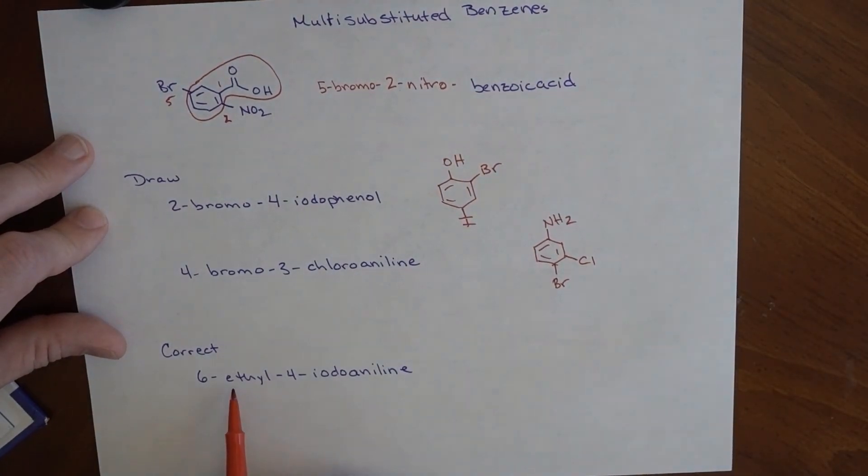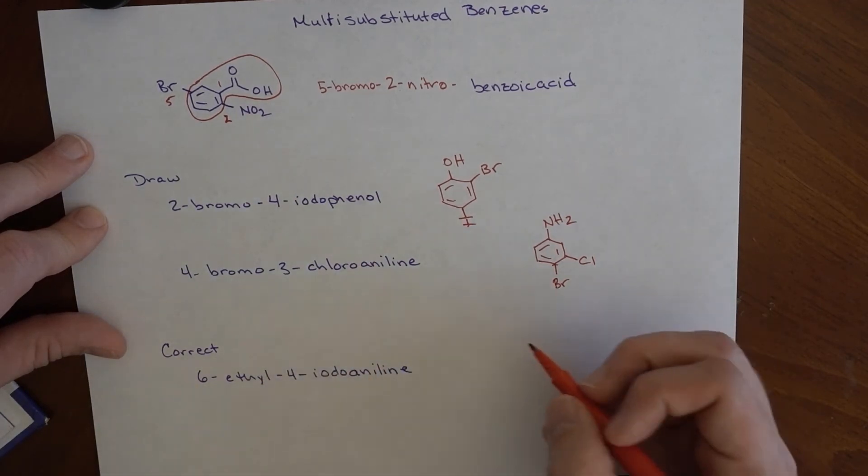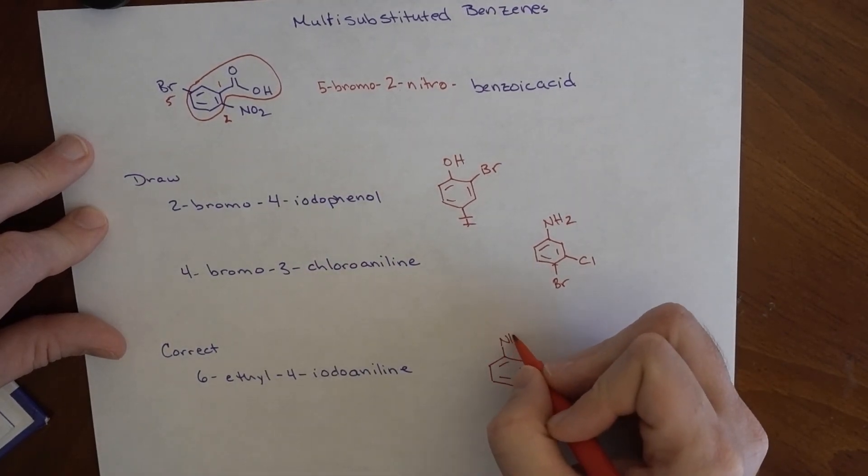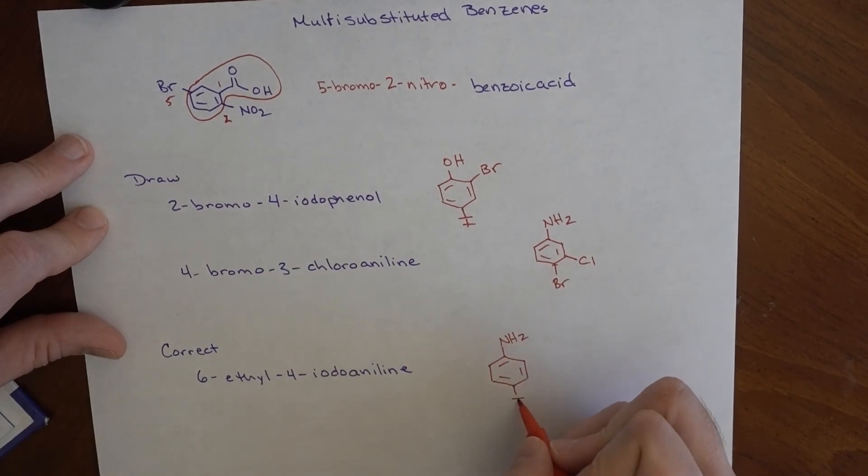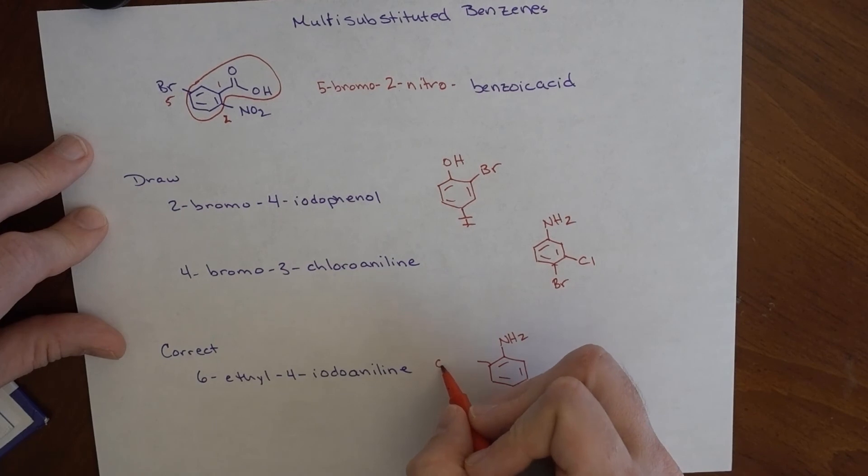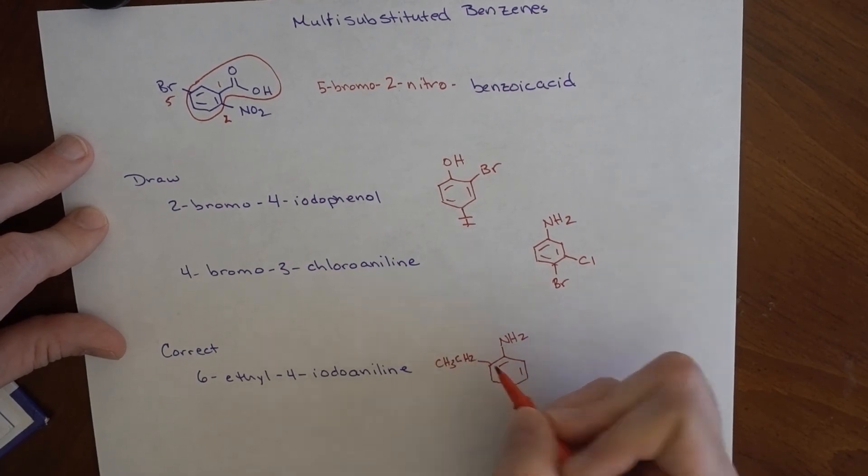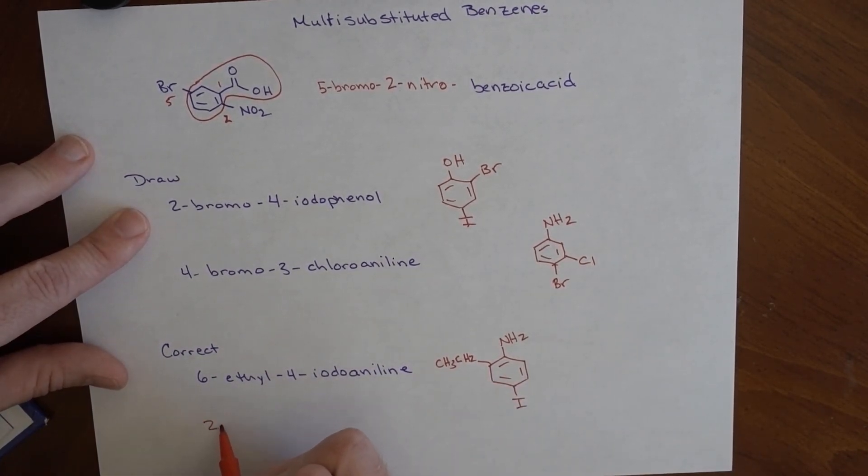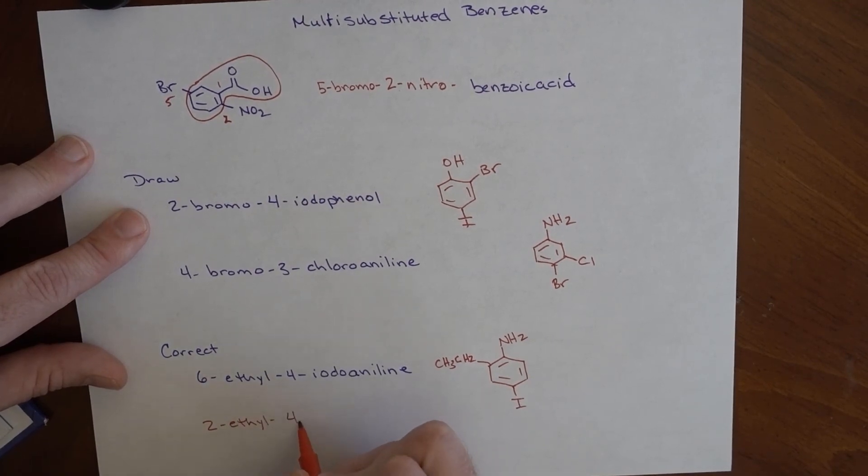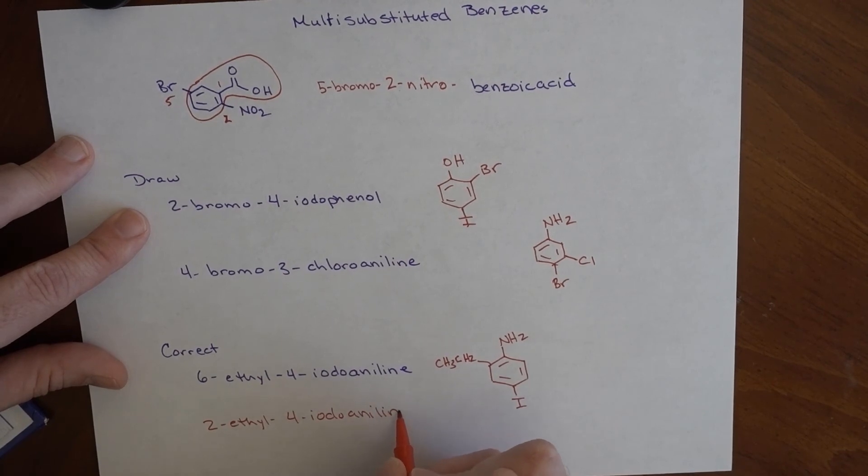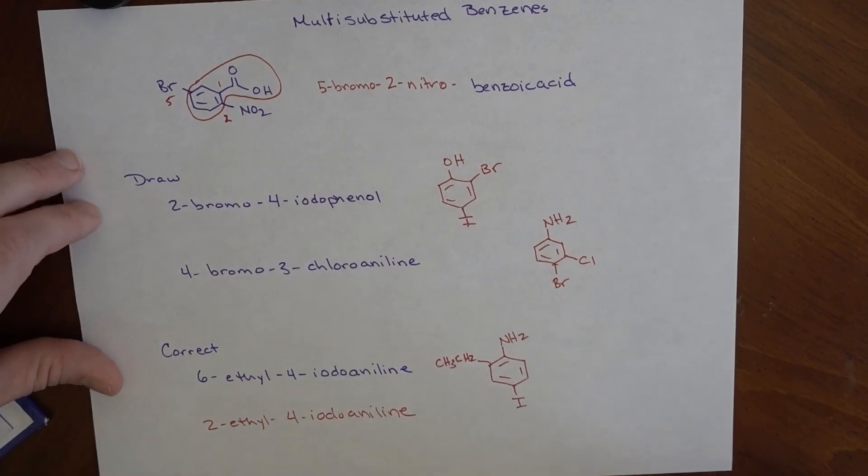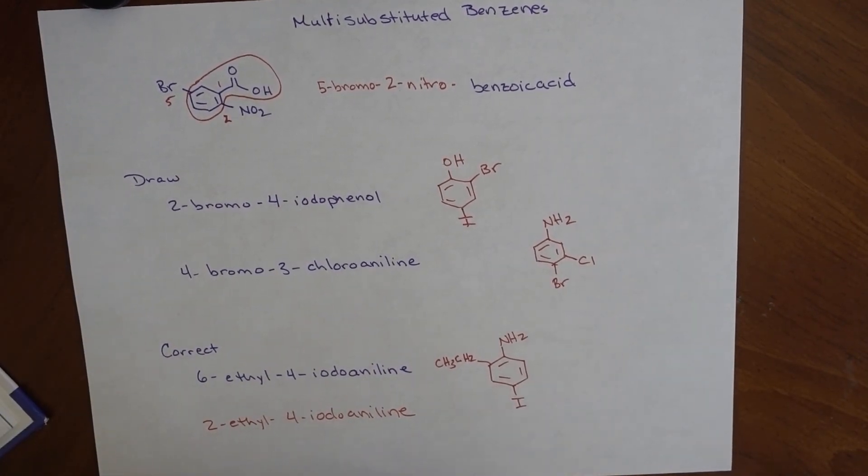And then, if we have this one here, it is given to us as 6-ethyl-4-iodophenol. We want to correct this. Let's draw it the way it's written. Phenol is this. 4-iodophenol is this. 6-ethyl would be this. Well, I can come up with a lower set of numbers. So this would actually end up being 2-ethyl-4-iodophenol. That is how we would correct this. There are some problems in Bruce where they actually ask you to correct some of these things, and that's the way you do it. You draw the way the name tells you, and then you go back and you rewrite it. I hope that helps with the naming of di- and multi-substituted benzenes.